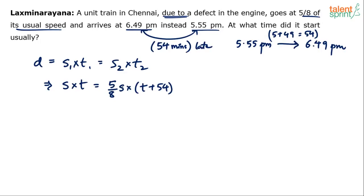Simplify. S gets cancelled on both sides. That's it, you're done. 8T equals 5T plus 5 × 54 is 270 minutes, which implies 8T minus 5T, 3T is 270 minutes, or T is equal to 90 minutes, which is 1.5 hours. So usually it takes 1.5 hours.